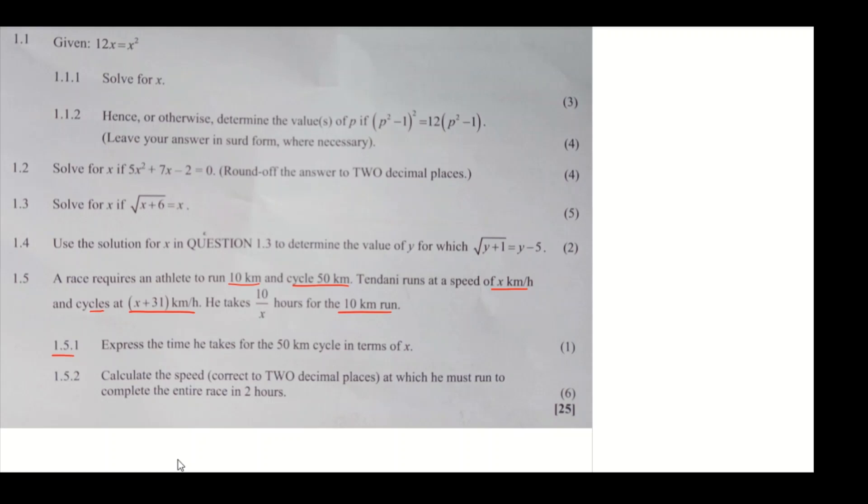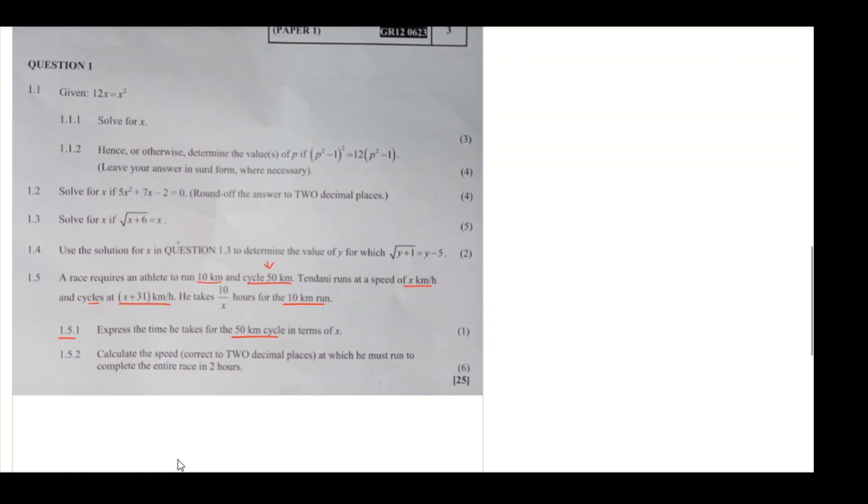Question 1.5.1: Express the time he takes for the 50 kilometer cycle in terms of x. So let's focus on the 50 kilometer cycle. To find time, we know velocity equals displacement over time. Cross multiply to get time equals displacement over velocity. The displacement is 50 kilometers and the velocity is x plus 31 kilometers per hour.